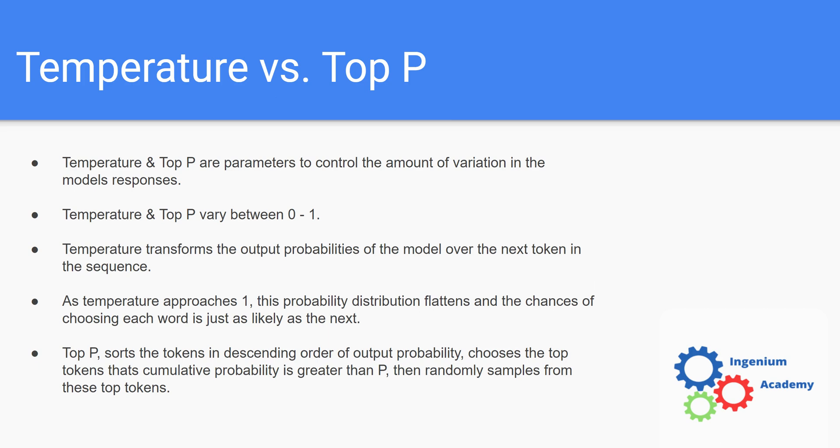They typically vary between 0 and 1. If you had a temperature of 0, your model is going to be producing similar outputs that won't change too much unless the prompt changes. Top P is the same way - a top P of 0 is even stricter. But if temperature is 1 and top P is 1, you're going to get a lot of variation. You may get a different response every single time, and it won't even depend upon the prompt.